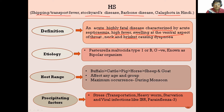The disease is caused by Pasteurella multocida type 1 or B, which is a gram-negative bacteria. The organism is also known as a bipolar organism because both poles take up the stain, while the part between the poles does not take the stain when stained by Gram's stain, methylene blue, or Leishman stain.